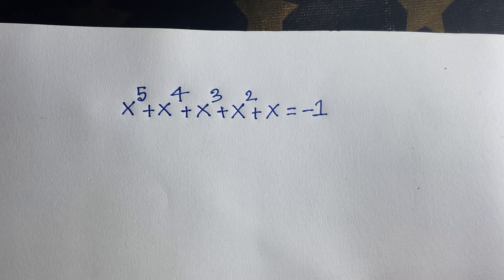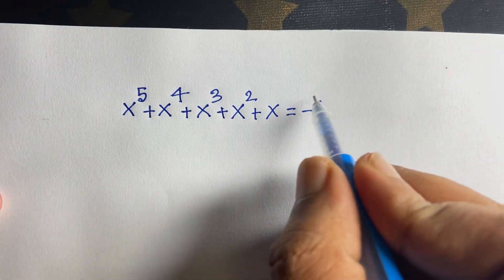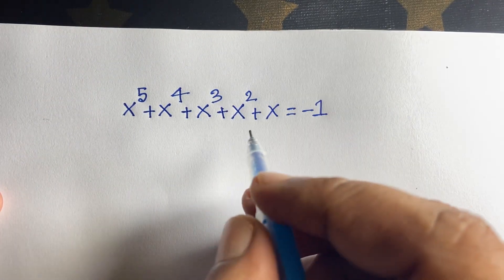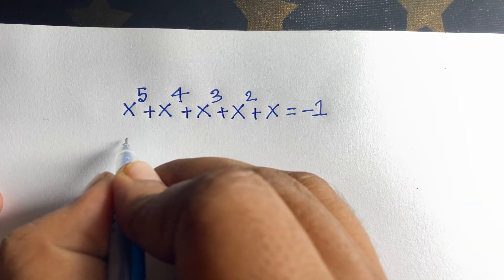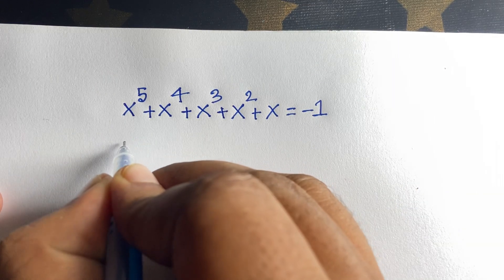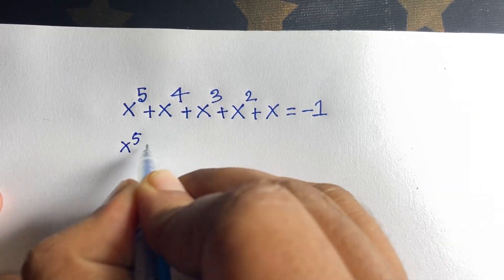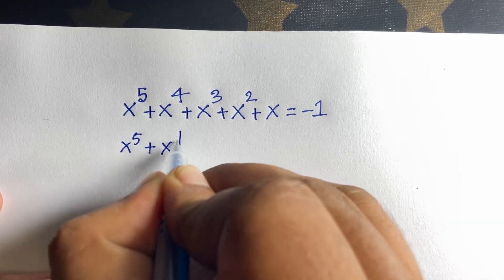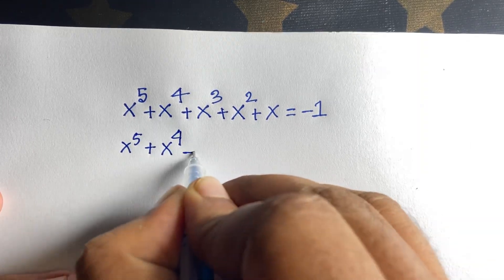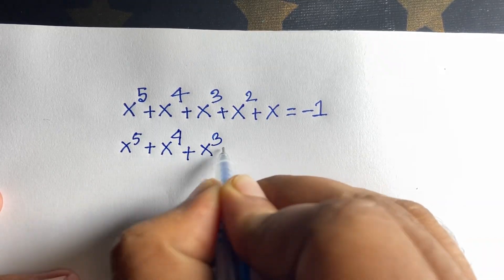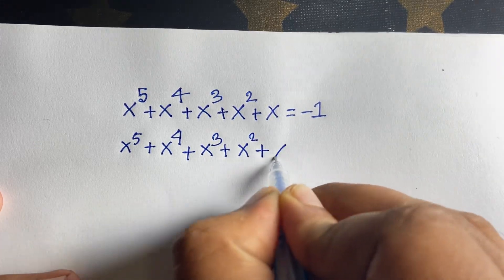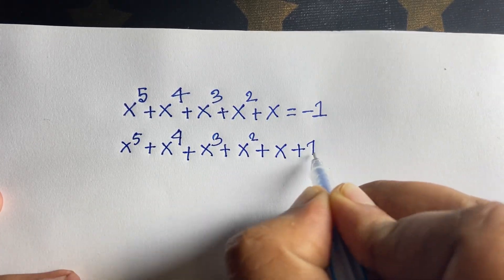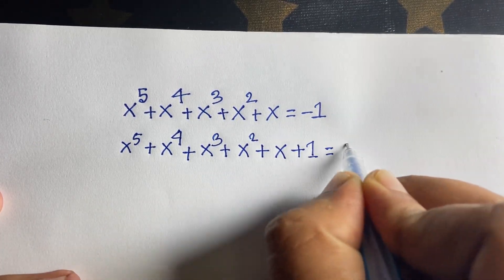So how to solve this question? First of all, we have moved this minus 1 to the left side, so it will be positive. The equation becomes x to the power 5 plus x to the power 4 plus x to the power 3 plus x to the power 2 plus x plus 1 is equal to 0.